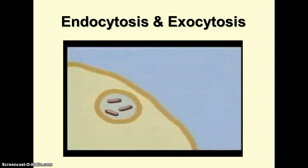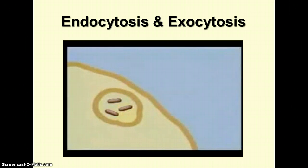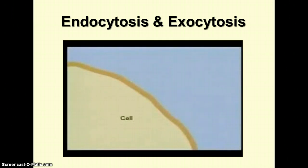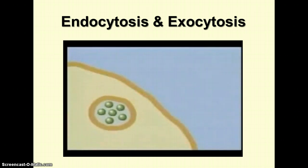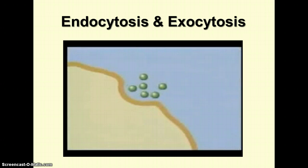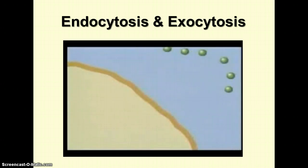Once inside the cell, the vesicle containing the bacteria fuses with another vesicle called a lysosome. The lysosome contains digestive juices which destroy the bacteria. Exocytosis is the opposite of endocytosis — particles are transported out of the cell. A vesicle containing wastes or cell products moves toward the cell membrane, and the membrane surrounding the vesicle fuses with the cell membrane. The contents of the vesicle are secreted as the membrane smooths out.